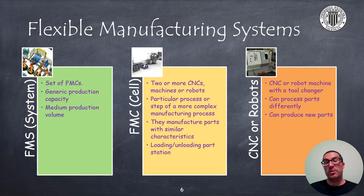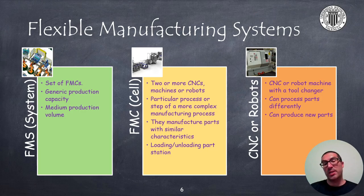If a robot or CNC machine does not include the possibility of manufacturing a part in a certain way — for example, because a specific tool is not available — then the flexible manufacturing cell will not be able to manufacture that kind of part. However, once a flexible manufacturing cell has been designed, it is quite straightforward to extend its capabilities if necessary.